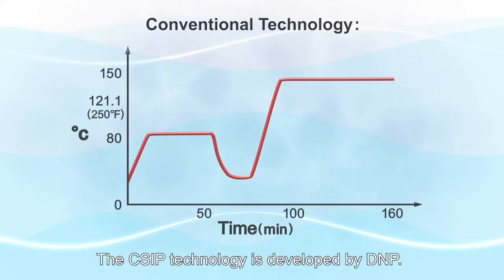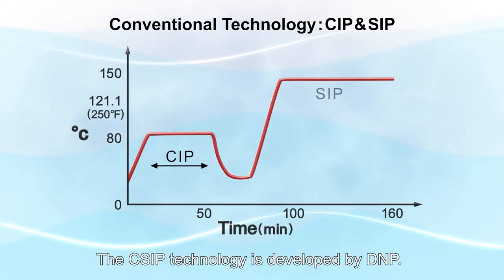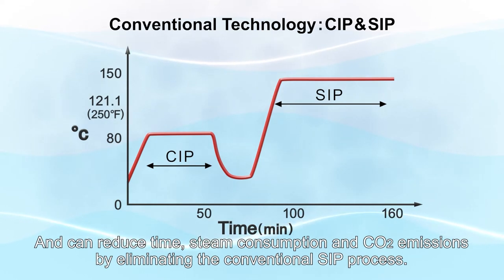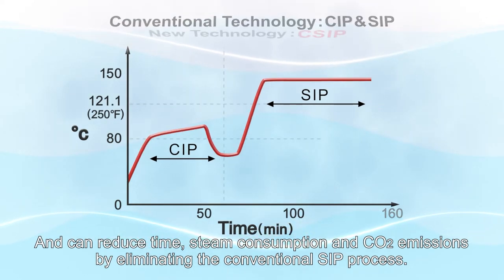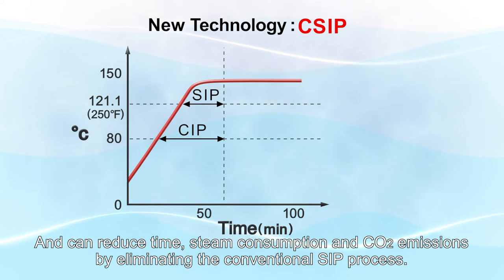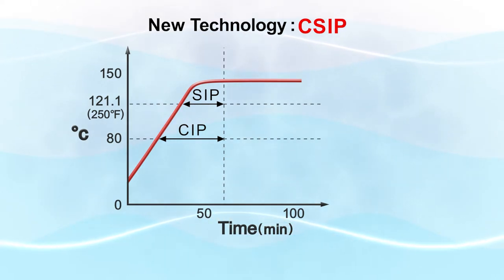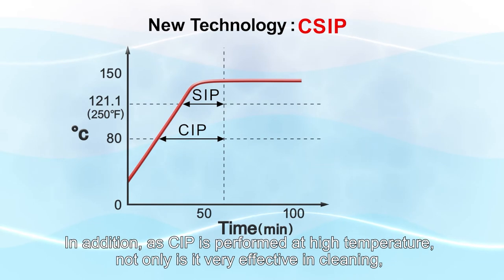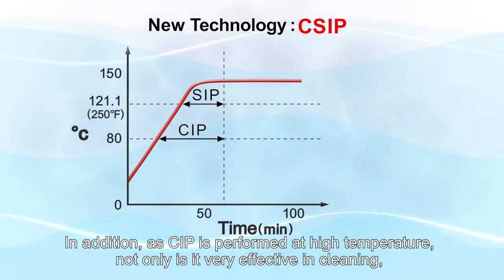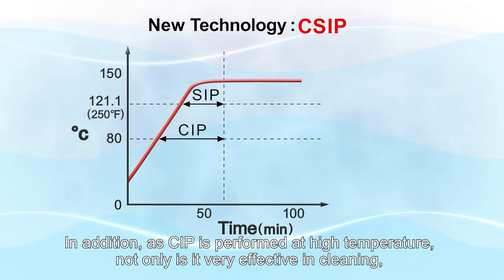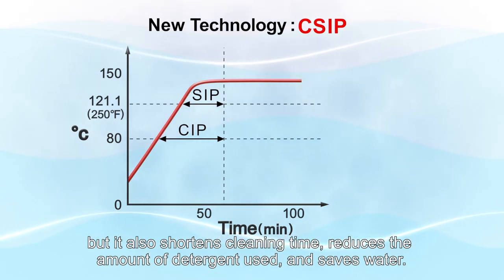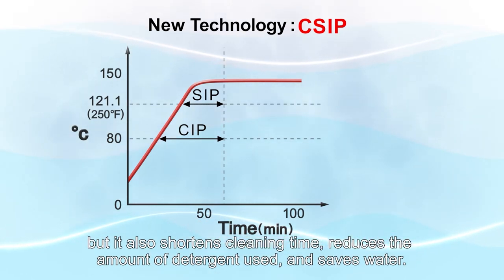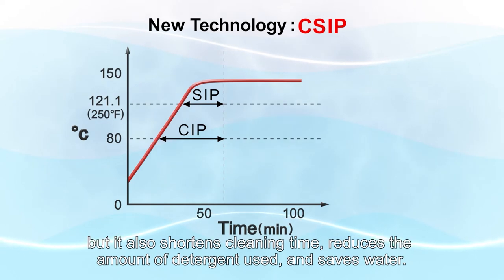The CSIP technology is developed by DNP and can reduce time, steam consumption, and CO2 emissions by eliminating the conventional SIP process. In addition, as CIP is performed at high temperature, not only is it very effective in cleaning, but it also shortens cleaning time, reduces the amount of detergent used, and saves water.